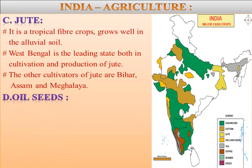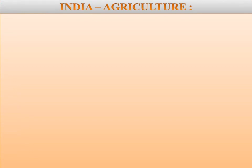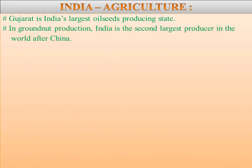Next we are going to learn about oilseeds, the last point of cash crops. Oilseeds, the primary source of fat in the Indian diet, are derived from a number of crops like groundnut, rapeseed, mustard, sesame, linseed, sunflower, castor seed, cottonseed, niger seeds, etc. These provide oil and oil cake which are used for making lubricants, varnish, medicine, perfume, candles, soap, manure, and cattle feed. Gujarat is India's largest oilseed producing state. In groundnut production, India is the second largest producer in the world after China.